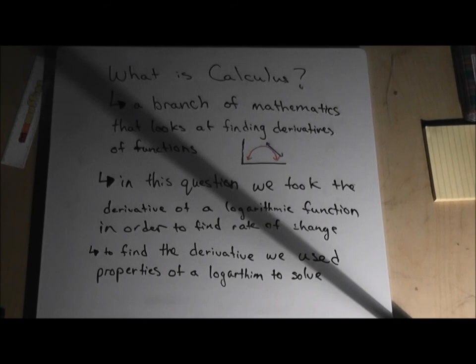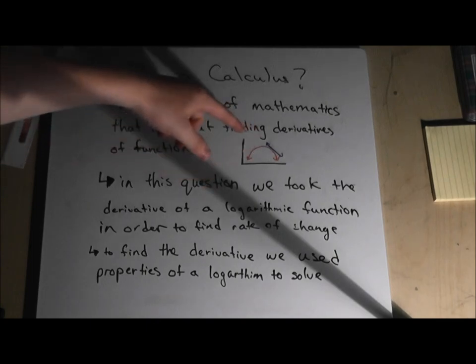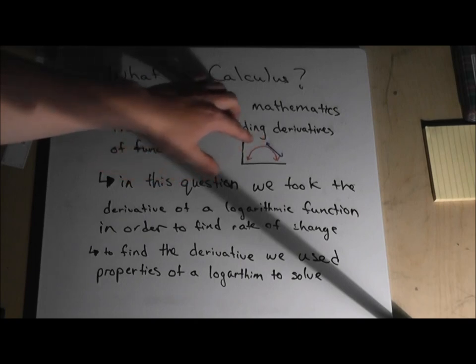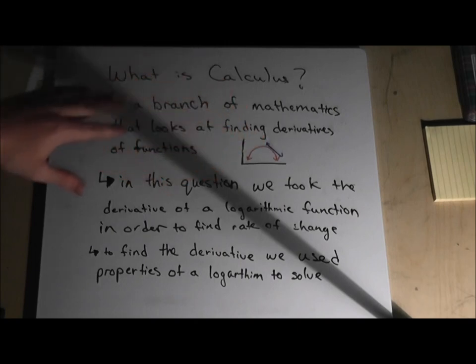So, what is calculus? Calculus is defined as a branch of mathematics that looks at fine derivatives of functions and the properties of these derivatives. In this question, we took the derivative of a logarithmic function in order to find the rate of the change. And here's an example. Rate of change gives us the slope at any point. This is called a derivative, getting the slope at any point in a function. And to find the derivative, we had to use properties of a logarithm to solve. And this is how this question fits in the scope of calculus.